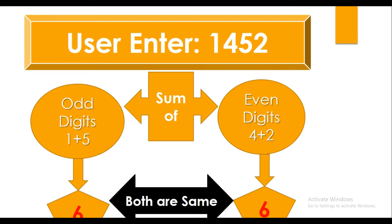Suppose the user has entered the number 1452. Through programming, we have to separate the odd and even digits, then do the addition of both. In 1452, the odd digits are 1 and 5, and the even digits are 4 and 2. So the odd digit sum is 6, and the even digit sum is 4 plus 2, which is also 6.